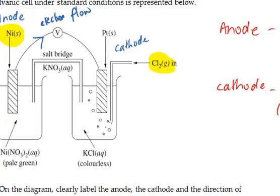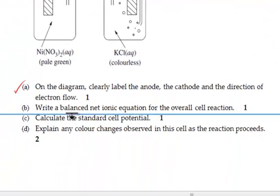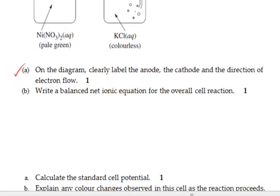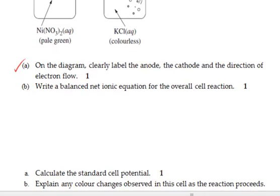The second question asks us to write a balanced net ionic equation for the overall cell reaction. So in other words, we need to write the redox equation. To write that, we have to understand, as we just did earlier, what happens at each electrode, and how the electrons are transferred, and how they are lost or gained. So the best way to write this is actually setting out our half equations.